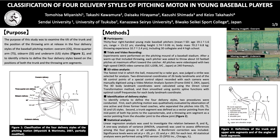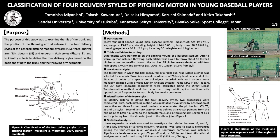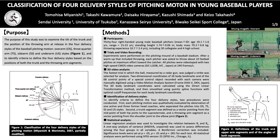It is important to be able to classify baseball pitches into the various delivery styles. Figure 1 shows that the baseball pitching motion is generally classified into 4 styles based on the release position of the throwing arm in the global reference frame: overarm, three-quarter arm, sidearm, and underarm styles.